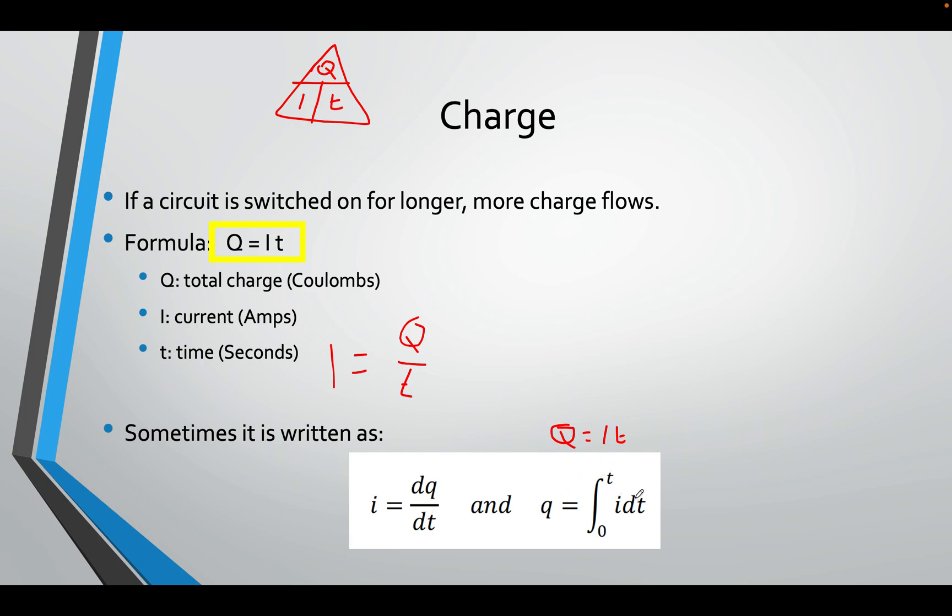Sometimes it's written in integral form, which is Q equals integral of I dT, which is the current in a small time frame. So it's the same formula, Q equals I dT, just written slightly different.